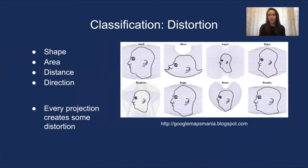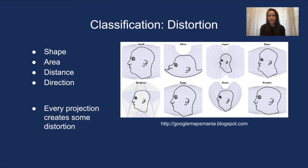The second type of classification method is by distortion, and there are four types: shape, area, distance, and direction. Every projection is going to create some distortion because of the method we just talked about. So it's important to think about the function of your map before choosing a projection. For example, in creating a navigational map you'd want to choose a projection that preserves distance and direction while allowing for distortion in shape and area, because those are less important to the function of your map.